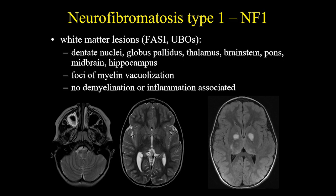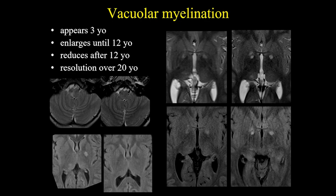Talking now about specific imaging findings, we're going to start with the white matter lesions. They are mostly located in the dentate nuclei, globus pallidus, thalamus, brain stem pons, also in the midbrain, and lastly in the hippocampus. It's a focus of myelin vacuolization and there is no demyelination or inflammation associated with this lesion. The vacuolar myelinization appears around 3 years old. It can enlarge until the age of 12 and then reduce in size and numbers. Over the age of 20, all the lesions may resolve.